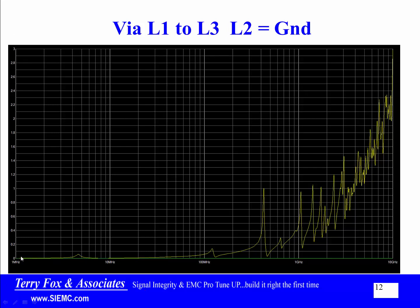Going just above 1 gigahertz, the maximum resonant peak is about 1 ohm for a via going from L1 to L3 that has a stub from L3 down to L8, but going either side of the ground plane.